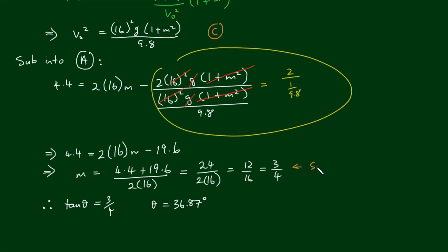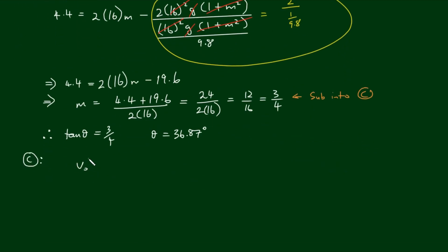Now that we've got m, let's substitute into equation C. We have v0 squared equals 16 squared g divided by 9.8 times 1 plus 3 quarters squared. Using g equals 9.81 meters per second squared, we have 256 times 9.81 divided by 9.8, which almost cancels, by 1 plus 3 quarters squared, and that equals about 400.41.